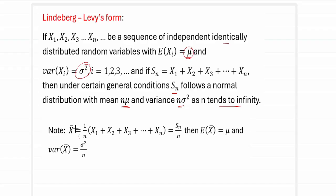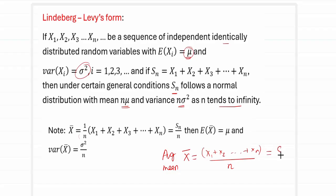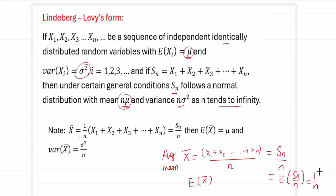The average, or sample mean, of the random variables is denoted by x-bar. The mean is the sum of the data divided by the total number of data points, and the sum in the numerator is nothing but Sn. So x-bar equals Sn divided by n. The mean of x-bar equals the expected value of Sn over n. Since n is a constant, we take it outside: expected value of Sn is n times mu, and n and n cancel, giving us expected value of x-bar equals mu.